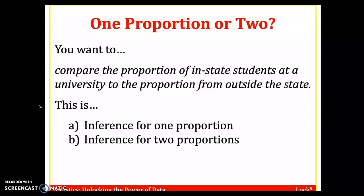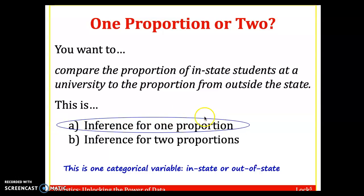Suppose you want to compare the proportion of in-state students at a university to the proportion from outside the state. Say we're looking at SRJC, our college. You want to compare the proportion of in-state students at the JC and the proportion from out-of-state. How many variables are there? Just one. You're only asking a sample of students, are you from in-state or from out-of-state. This would be one proportion.